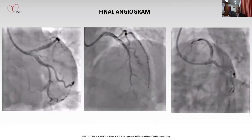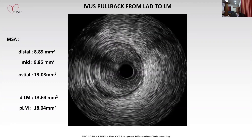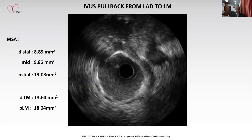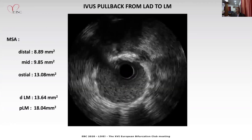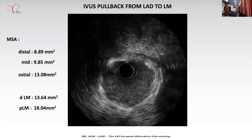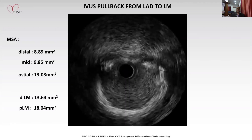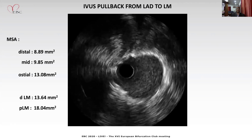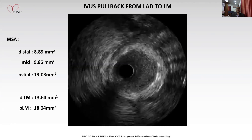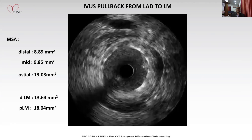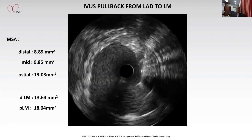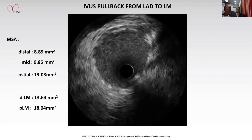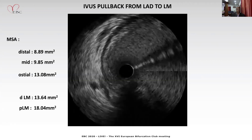Final angiographic results showed good flow in LAD and circumflex. IVUS pullback from LAD to left main confirmed a well-expanded and apposed stent in the LAD. Minimum stent area was 8.9 mm² in the distal part, 9.9 mm² in the mid portion, and 13 mm² at the ostium of the LAD. In the left main part, we noticed some protruding crushed stent struts between 1 to 3 o'clock position, but the lumen obtained was 13.6 mm. At the proximal part, we obtained a minimum stent area of 18 mm².